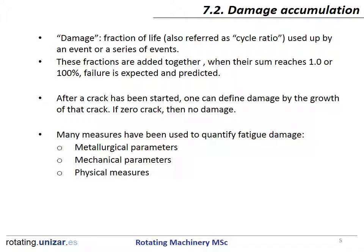Many measures have been used to quantify fatigue damage: metallurgical parameters, mechanical parameters, and physical measures. Within metallurgical parameters, we can use the size or number of dislocations. Within the mechanical parameters, damage can be measured as a modification of hardness, stress, strain, or stiffness. Physical measures indirectly quantify the fatigue damage and consist mainly of non-destructive techniques.